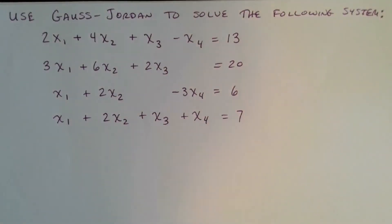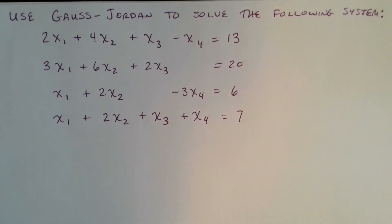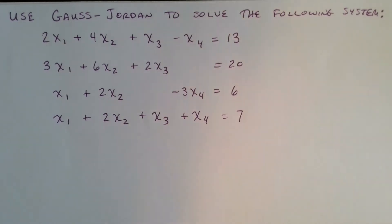Let's look at an example of how to use the Gauss-Jordan method to solve a system of linear equations. The Gauss-Jordan method takes the augmented matrix down to its reduced row echelon form, which is unique — every matrix has a unique reduced row echelon form. The Gauss-Jordan method involves both the forward elimination and the backward elimination methods together.